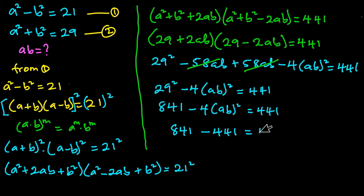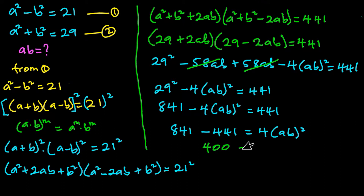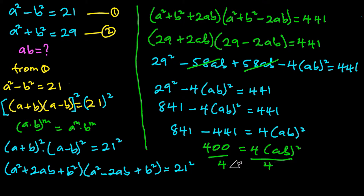Now let's simplify. 29 squared is 841, and 841 minus 441 is 400. So we have 400 equals 4 times ab squared. Since we want to find ab, I'll divide each side of the equation by 4, so 400 divided by 4 is 100, which equals ab squared.